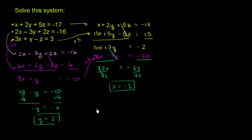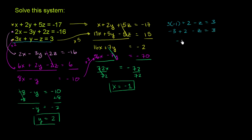Now we just need to find z. Substituting back into the last equation: 3 times x, which is 3 times negative 1, plus y which is 2, minus z equals 3. So negative 3 plus 2 minus z equals 3, giving negative 1 minus z equals 3. Adding 1 to both sides: negative z equals 4, so multiplying by negative 1, z equals negative 4.